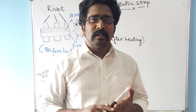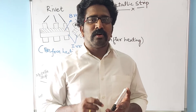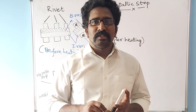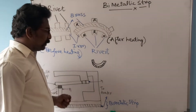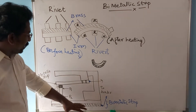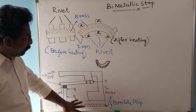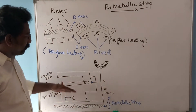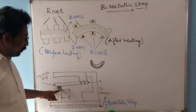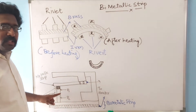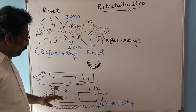Bimetallic strips are used in electrical geysers, electrical press or iron box, and also in car indicators. Here I have drawn a diagram of a heater — the top part is a metallic strip and the bottom part is a bimetallic strip. Between the metallic strip and the bimetallic strip we have contact points — let the top one be contact point one and the second one be contact point two.